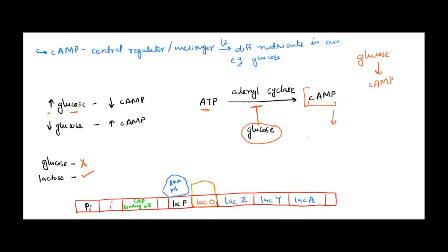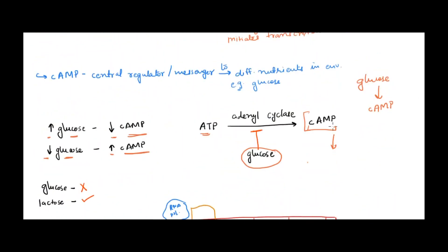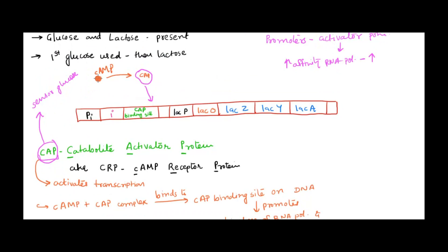If there is a high level of glucose in the medium, it inhibits adenylyl cyclase, so no cyclic AMP is produced and cyclic AMP levels decrease. On the other hand, if glucose is very low or absent, adenylyl cyclase will produce cyclic AMP from ATP, giving a high level of cyclic AMP in the cell. This is inversely proportional: if glucose is high, cyclic AMP is low; if glucose is low, cyclic AMP is high. Cyclic AMP is also called a hunger molecule because it indicates whether glucose is present or not.